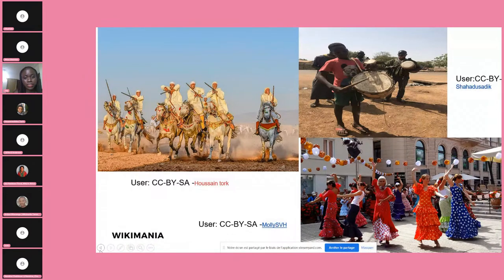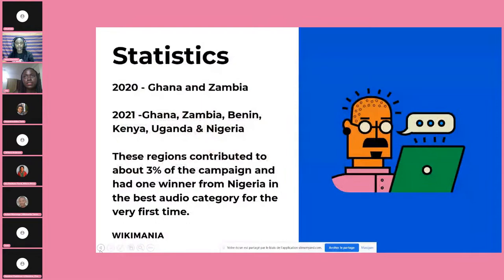We've had good representation from African groups, starting from Ghana and Zambia in 2020. Now about six countries have participated — Benin, Kenya, Uganda, Nigeria, and Tanzania participated in this year's competition. Although there has been an increase in communities participating, the percentage is still on the low side. We realized some groups face challenges with freedom of panorama — some heritage sites make it impossible to capture images because there is no freedom of panorama, which we are trying to address by encouraging communities to discuss with their respective governments.